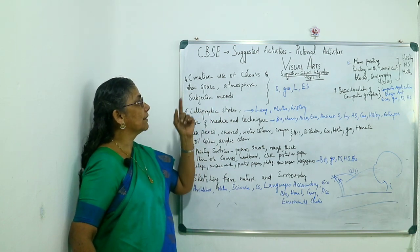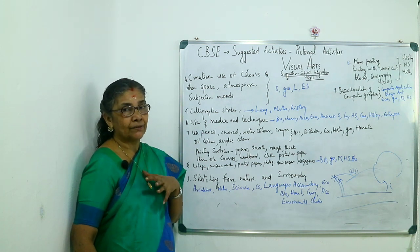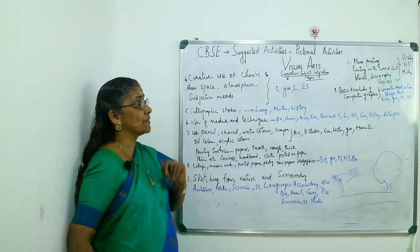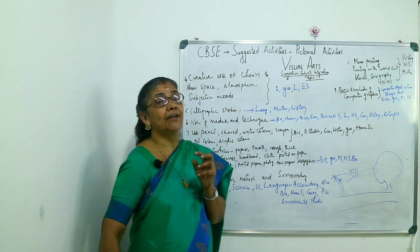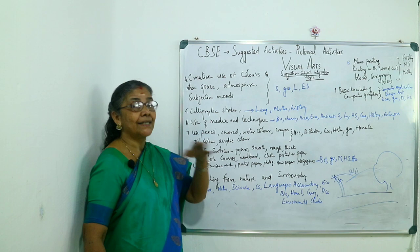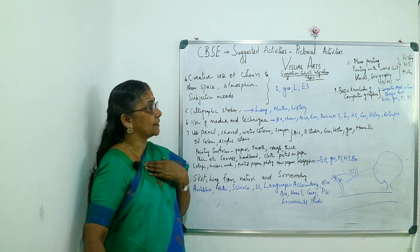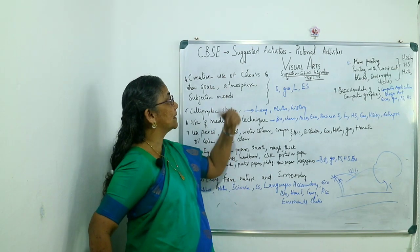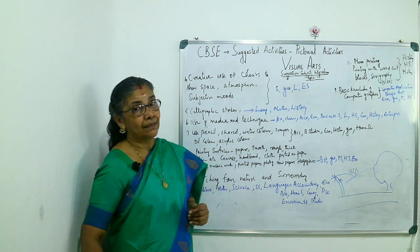Coming to the fourth point: creative use of colors to show space, atmosphere and subjective moods. We use some colors and from the color combination we are able to understand the atmosphere and space, and whatever the emotional condition of a person — that is subjective moods. That can also be illustrated and explained with these colors. It can be used in science, geography, languages and environmental studies.